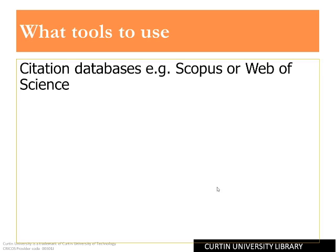Both databases have a feature that will automatically calculate the H-Index based on a retrieved article set. Currently, these databases only index journal articles and some conference proceedings. They will not pick up citations in books, most foreign language journals, and other sources, including patents and theses.